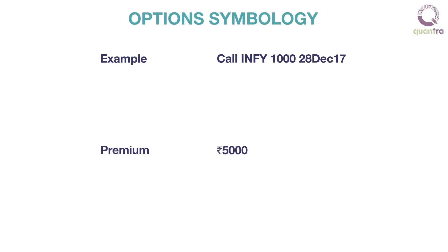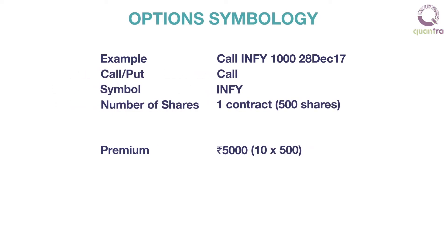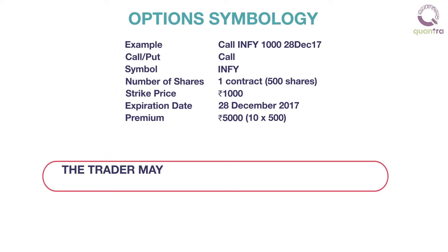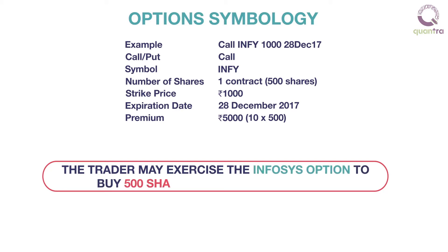An option contract can be defined by the following elements. Suppose a trader pays ₹5,000 to buy a call option priced at ₹10 on Infosys shares, with a strike price of ₹1,000, and the expiry date for this contract is 28 December 2017. This means that the trader may exercise the Infosys option to buy 500 shares at ₹1,000 on the 28th of December 2017.